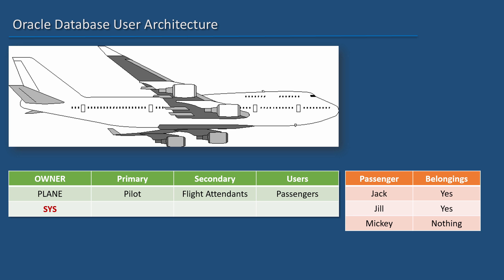Now let us compare this to the world of Oracle Database. Plane is the owner of all the important objects needed for the plane to function. Like that, there is a user inside every Oracle Database called Sys. This user owns all the Oracle-related internal objects.